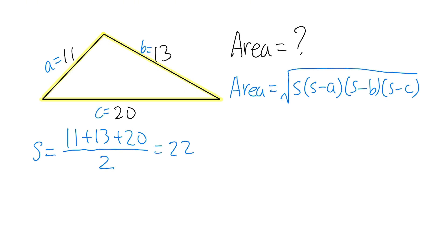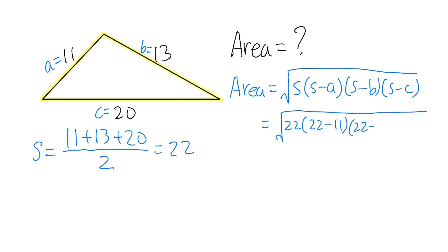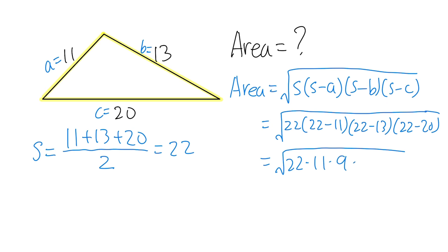C doesn't have to be the longest side, though. Now we can just go ahead and plug in the numbers. So here we have the square root: S is 22, and then we have 22 minus A, which is 11. Then 22 minus 13, and then 22 minus 20. So we have 22 times 11 times 9 times 2.